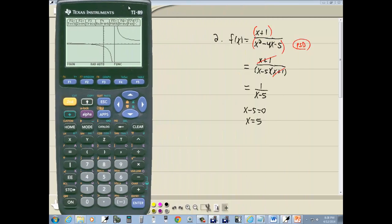So let's see what it looks like. So I'll go to diamond F1 for the y equals, up arrow to y1, press clear, do a beginning parentheses x+1, close parentheses, divided by beginning parentheses x, then caret 2 for the second power, minus 4x minus 5, closing parentheses, and press enter. And then I'm going to graph, so do diamond F3.